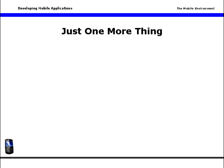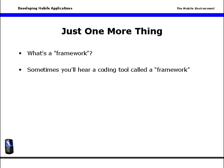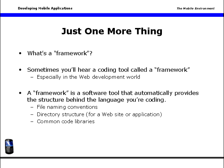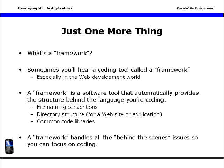Last but not least, you'll sometimes hear the word framework, especially in web development circles, and it will come up again as we encounter the mobile web. A framework is a software tool that automatically provides the structure behind the language you're coding. It automates lower-level processes for things like file naming conventions, directory structures, and common code libraries. A framework handles all the behind-the-scenes issues so you can focus on creating great code. This has been a brief introduction to the environment and the tools involved with coding applications.